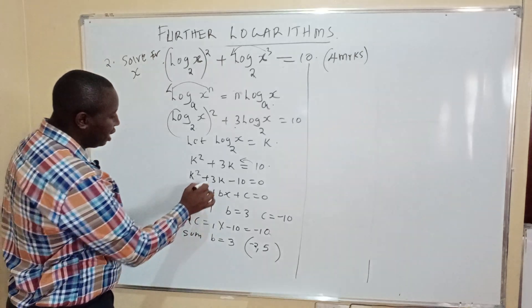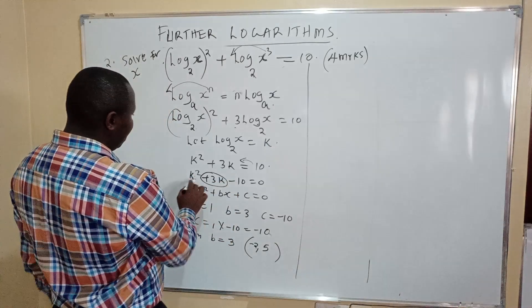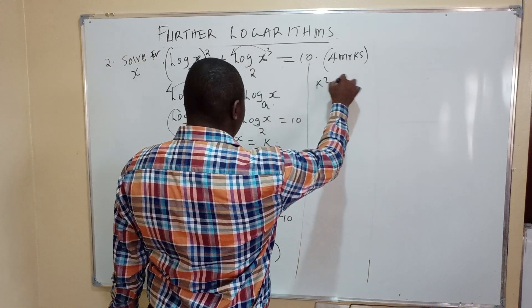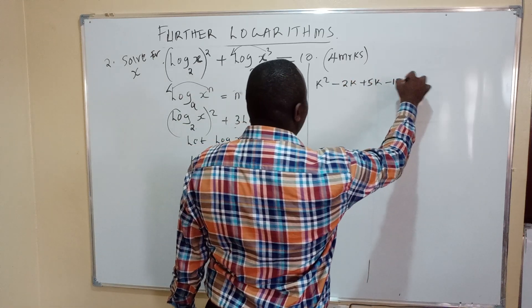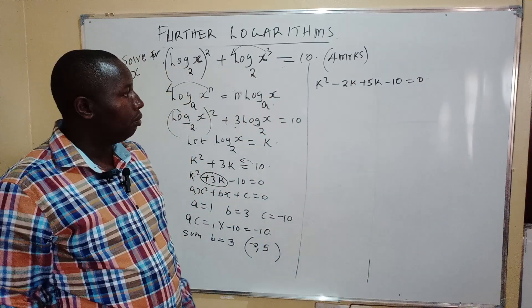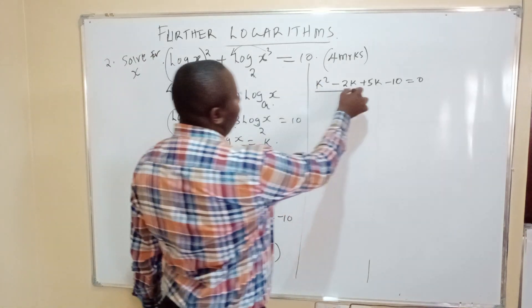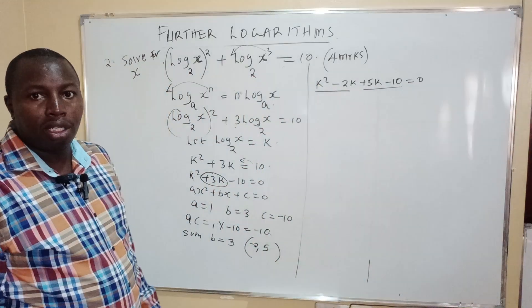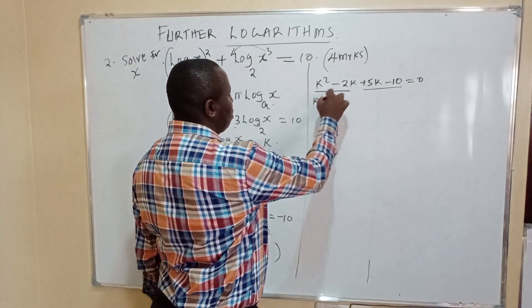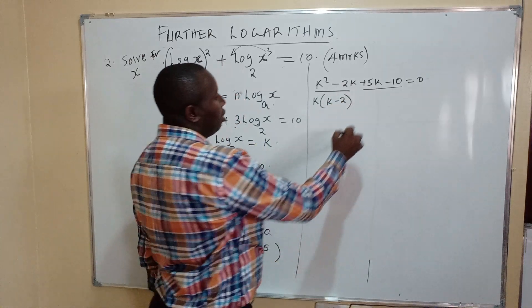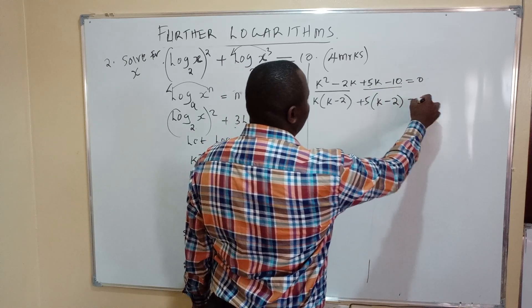Going back to the equation, replace 3k with negative 2k plus 5k: k squared minus 2k plus 5k minus 10 equals 0. Grouping and factoring: k(k minus 2) plus 5(k minus 2) equals 0. Taking out the common factor: (k plus 5)(k minus 2) equals 0.